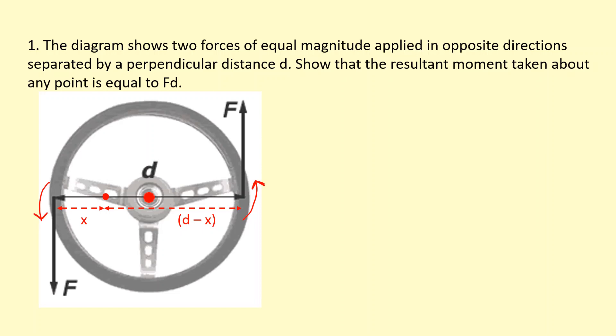So the moment, let's say from this force here, is just going to be force times the distance from that point, d minus x. And I'm going to add on the moment from this force here, which is just going to be force times the distance, which is x.